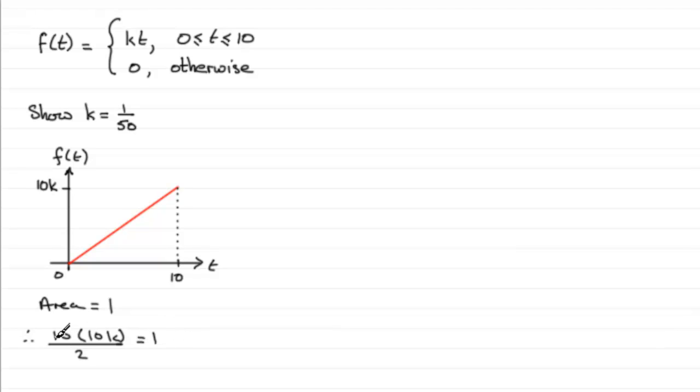And you can see that we've got 100k divided by 2, or 50k equals 1. So we've got therefore 50k equals 1, and it follows from that, that k must be equal to one-fiftieth.